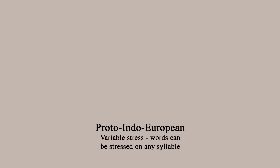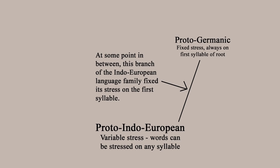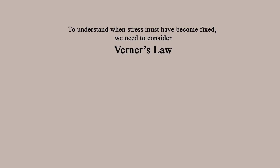Proto-Indo-European had variable stress, and we can actually work out when, in the course of its development to Proto-Germanic, it levelled its stress to being all on the first syllable. In other words, when did this branch of Indo-European — I'll have it on the diagram on the screen — lose its variable stress? The trick is that some of the sound changes that turned Proto-Indo-European into Proto-Germanic rely on there being variable stress. Specifically, we're thinking about Werner's Law. And to understand Werner's Law, you have to understand Grimm's Law, which you might already know about.